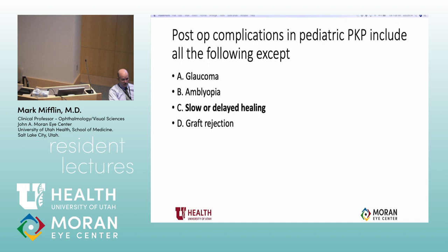Kids heal fast — sometimes you can take their stitches out very early. Literally, you can have all the stitches out in a penetrating keratoplasty in three weeks. In three weeks, without sutures the tissue would fall out. All of the other post-op complications listed are actually higher risk for pediatric cornea transplant.